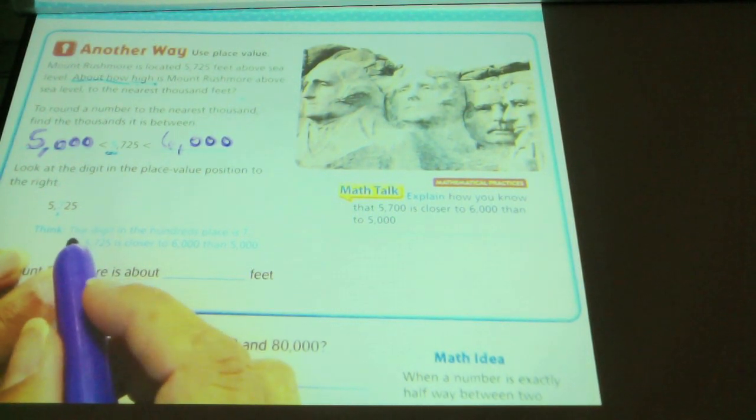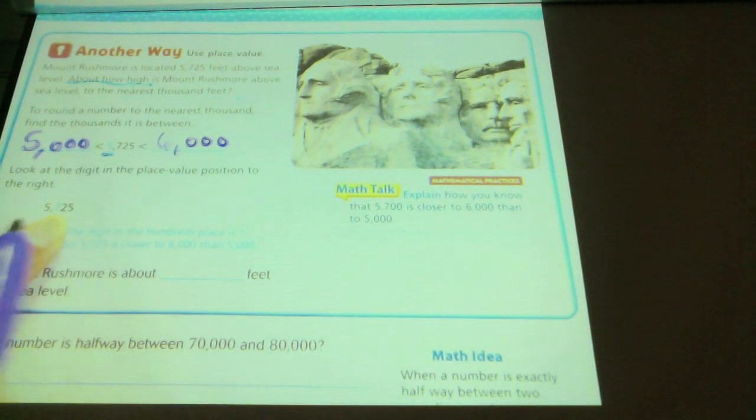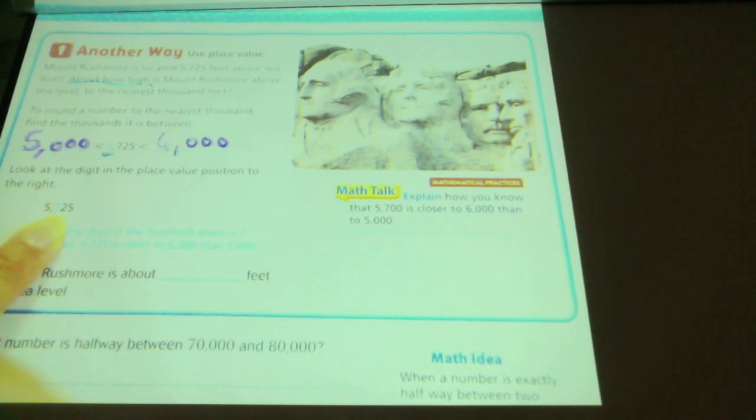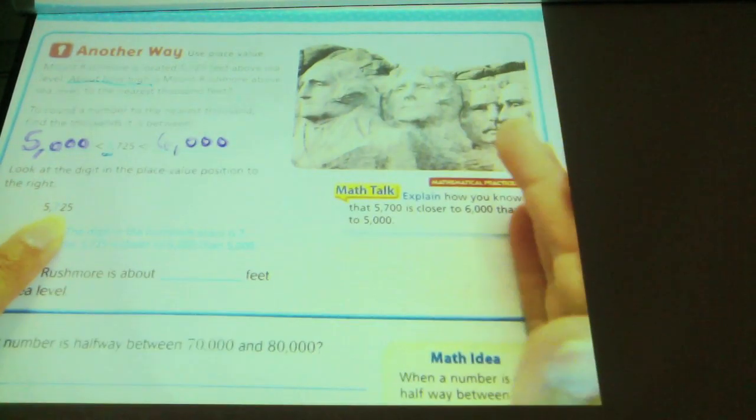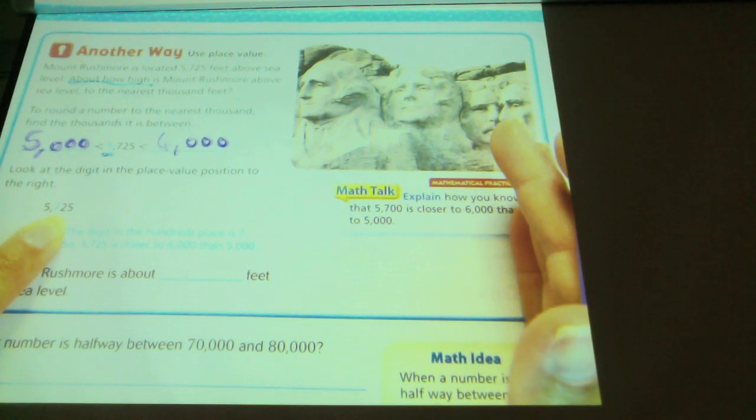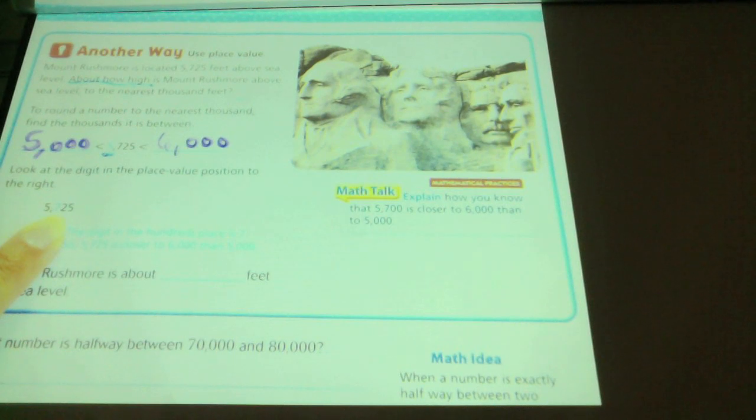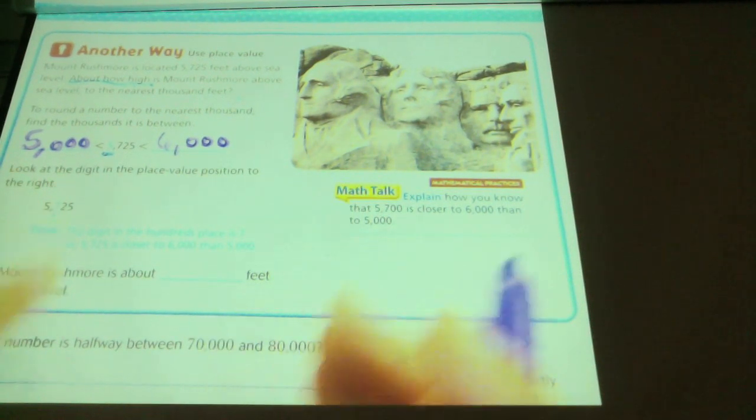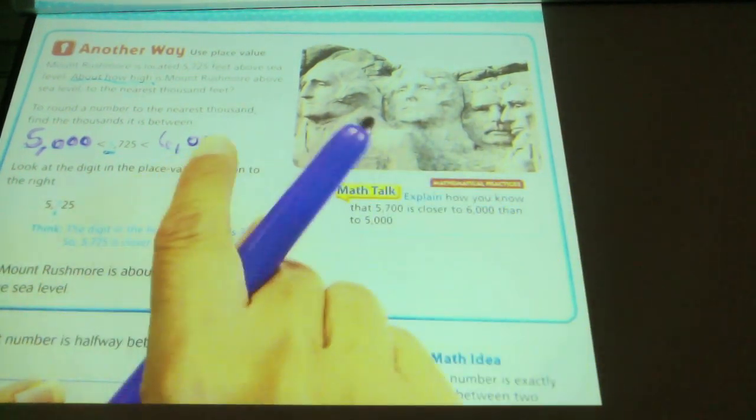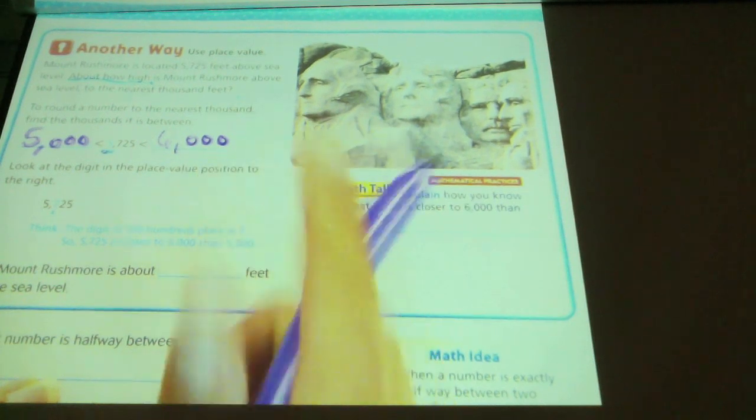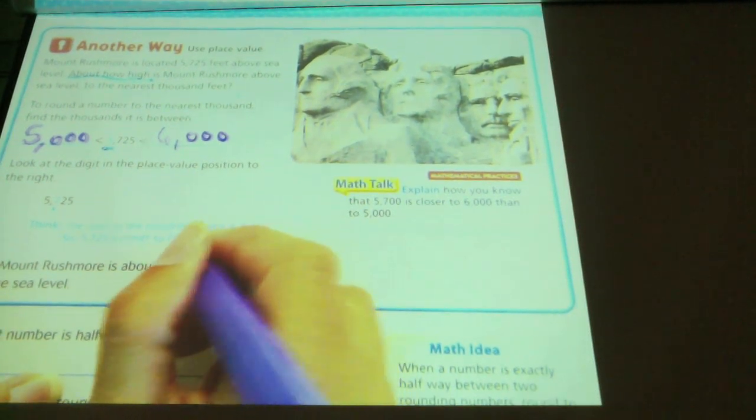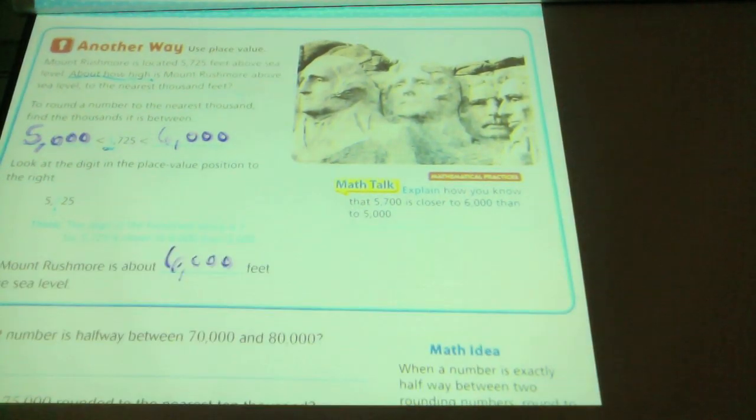Is that 7 on the right side of the halfway point or on the left side of the halfway point? I want you to think about it. If I had my number line, is that 7 going to be on the right side, closer to the bigger number? Or is it going to be on the left side, closer to the smaller number? What do you think, Vivian? It's going to be on the right side. So, it's going to be closer to the larger number. So, it is about 6,000 feet.